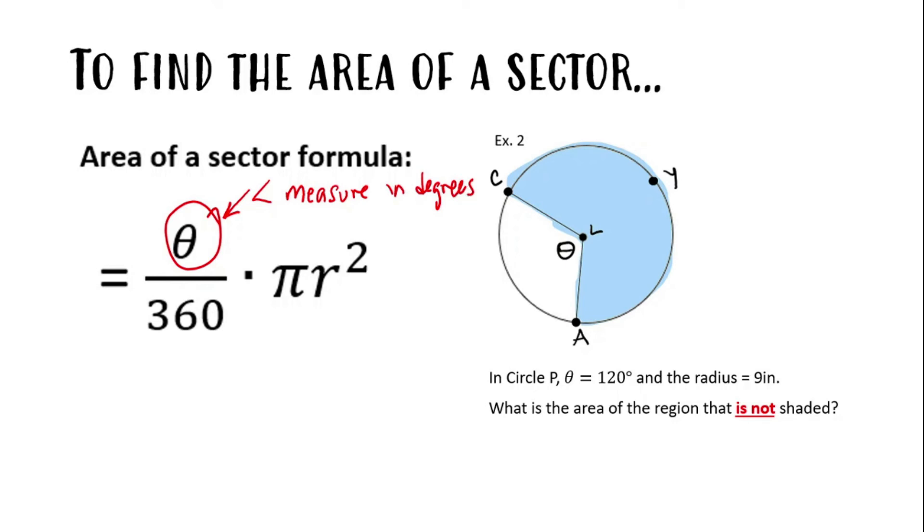For example 2, it says in circle P, the angle measure is 120 degrees. We see the angle measure is in the area that is not the shaded region, so I'm going to label that.